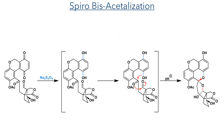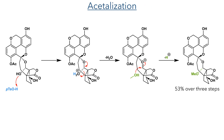This could be taken forward without purification and subjected to a spirobisacetalisation reaction. Reacting the compound with sodium dithionite reduces the quinone, and the resulting hydroxyl group undergoes intramolecular addition into the ketone. The oxygen of this ketone then participates in another acetalisation reaction, adding to the aldehyde to produce a single diastereomer. The crude product was then subjected to an acetalisation using PTSA in methanol with trimethyl orthoformate as a dehydration reagent. The acid activates the hydroxyl group, which is eliminated as water, allowing methanol to attack as a nucleophile to form the methyl acetal in a 53% yield over three steps.